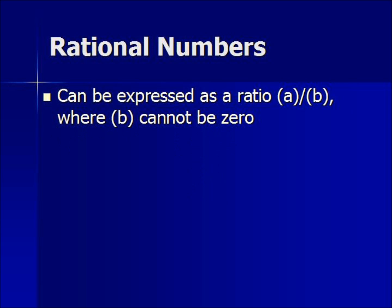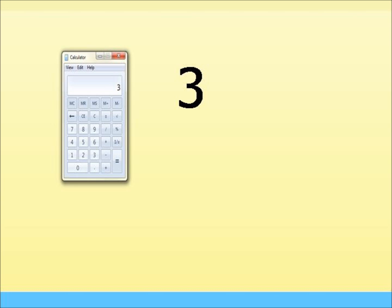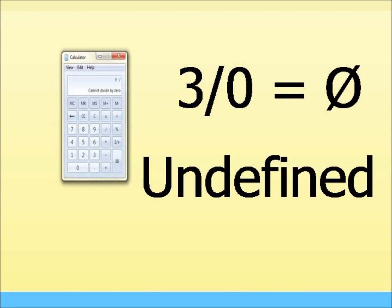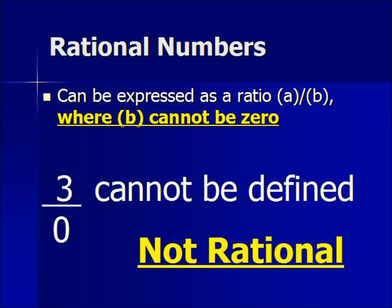Now let's explain the point where B cannot be 0. Here's a number 3 over 0. Evaluating that in our calculator, 3 divided by 0 gives an empty set — it's undefined. So since we cannot divide by 0, this number cannot be rational.